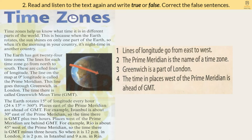Exercise 2: Read and listen to the text again, and write true or false. Correct the false sentences. Time zones help us know what time it is in different parts of the world. This is because when the Earth rotates, the sun shines on only one part of the Earth. So when it's morning in your country, it's night time in another country. The Earth has got 24 time zones. The lines for each time zone go from north to south — these are called lines of longitude. The line on the map at 0 degrees longitude is called the prime meridian. This line goes through Greenwich in London. The time there is called Greenwich Mean Time, GMT.